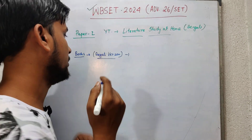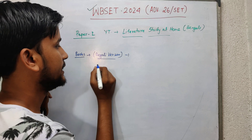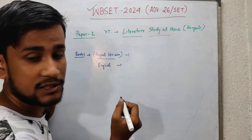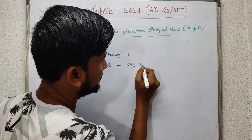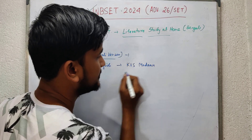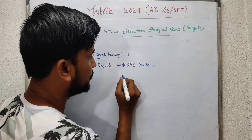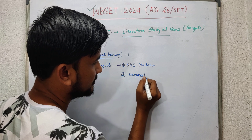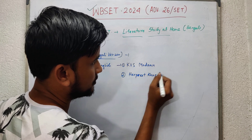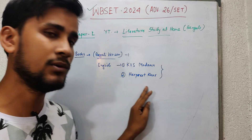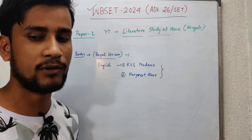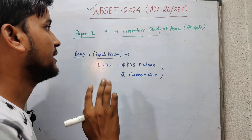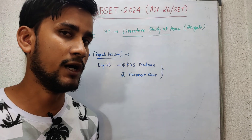If you want books for Paper 1 preparation in English version, you can choose the book by KBS Madan, and the second option is the book by Arpreet. You can take these two books if you want to practice in English version, and for Bengali version you can take the book by Aniruddha Kai. This is the information regarding Paper 1 preparation.